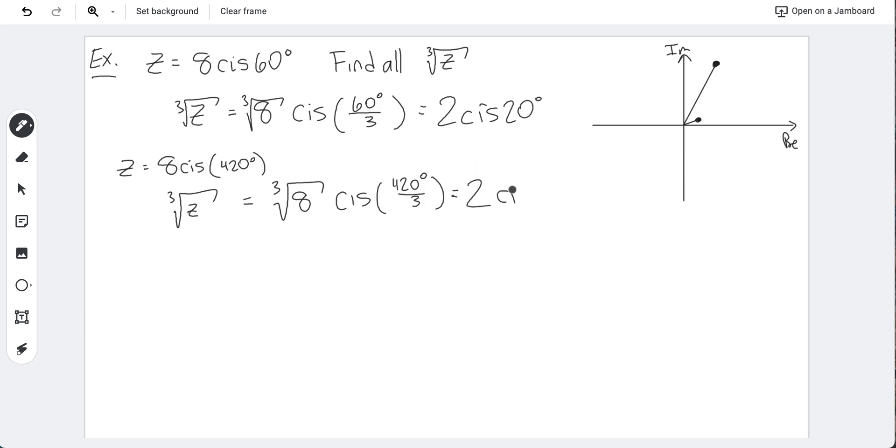I get cube root of 8, then cis of 420° divided by 3. A very interesting thing happens. The two stays the same, but now I get cis of 140°. So this says that if I go over to 140°, which is going to be around this spot, then if I take this and rotate it, multiply by itself, we get 4 cis 280°. And then we do it again, we end up in the same spot.